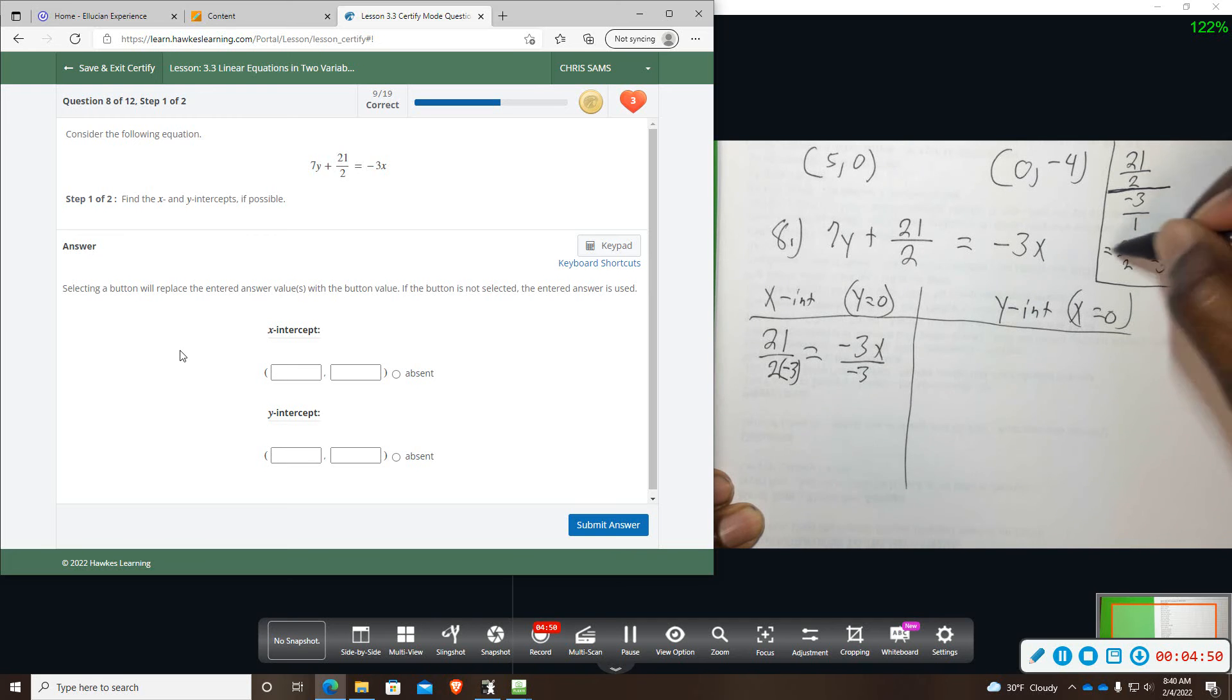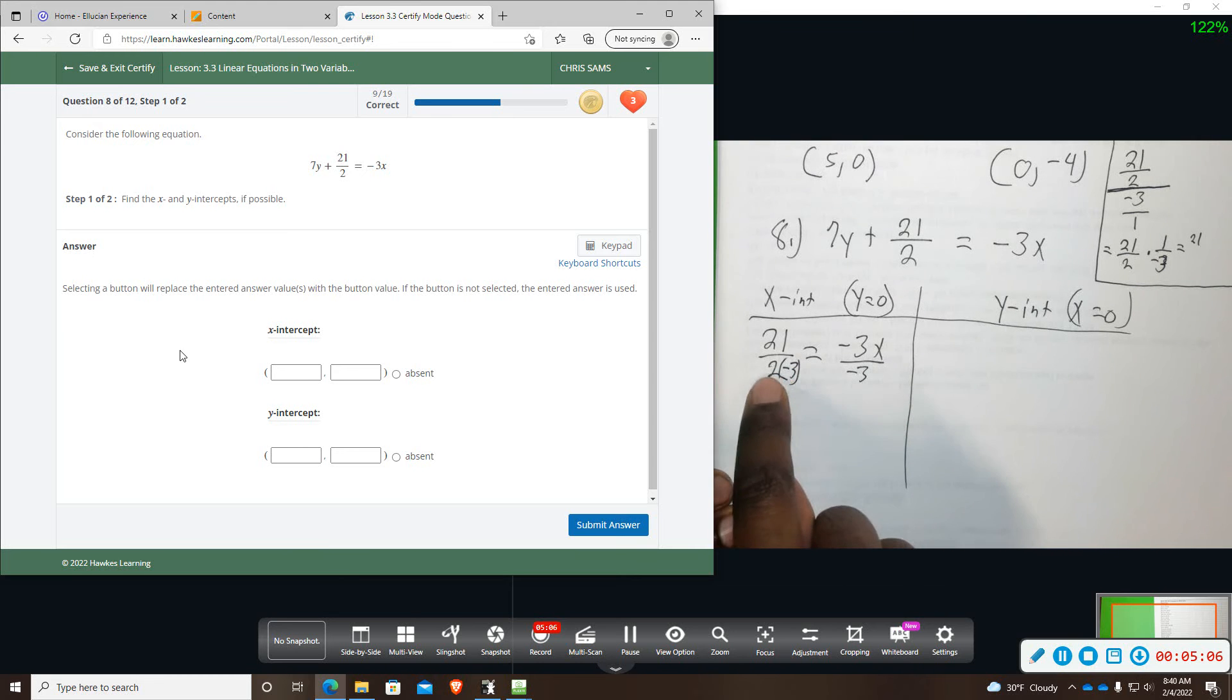And then when you multiply fractions, you just multiply straight across, no common denominator needed there. So at the end of the day, you're going to have 21, and then on the bottom you're going to have 2 times negative 3. So if you're going to divide and a fraction is already there, the number that you're dividing by is going to multiply the denominator, that's the short of it.